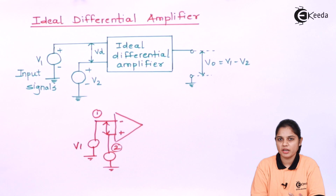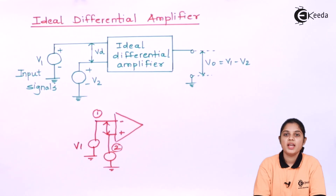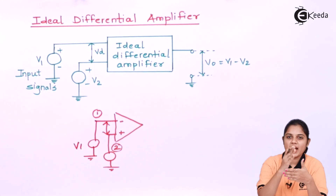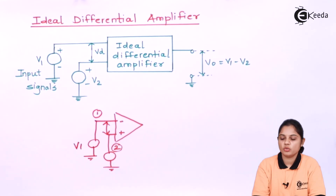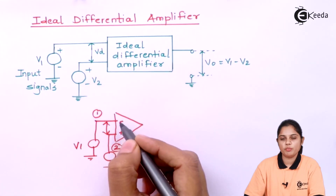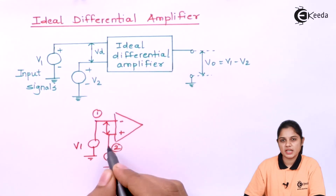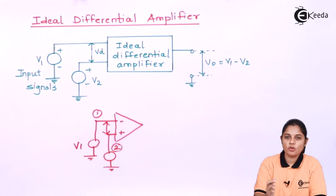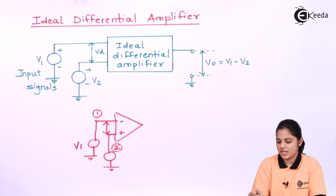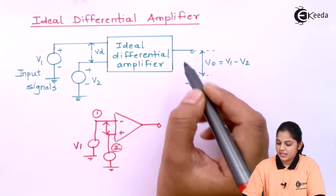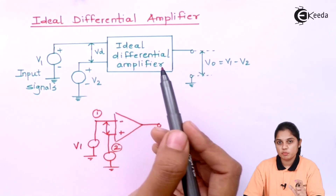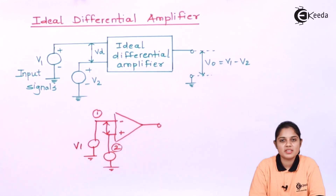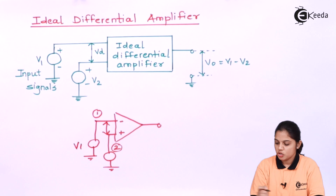The name 'differential amplifier' is given because it amplifies the difference between the two input terminals. Previously, you could either provide the input signal to the inverting terminal or to the non-inverting terminal — depending on which, you get either 180° out of phase or in-phase output. But here it is amplifying the difference between the two input terminals, which is your output voltage.